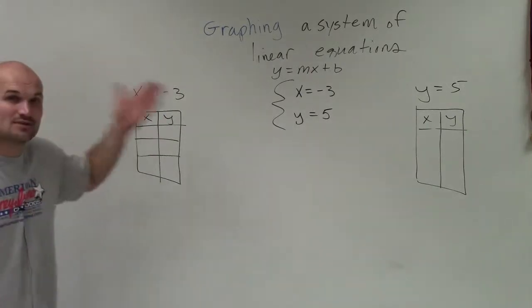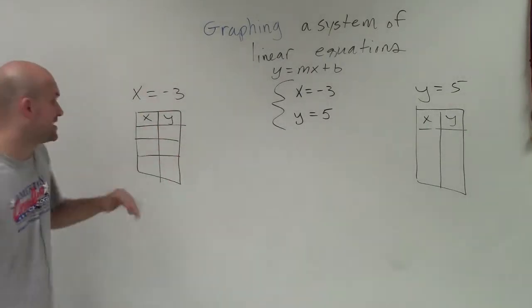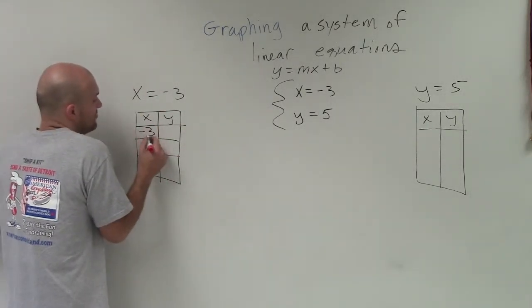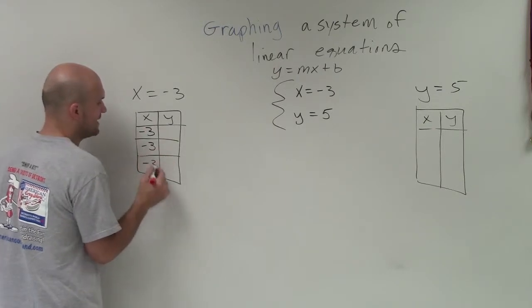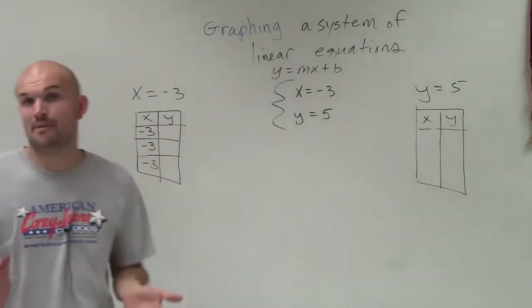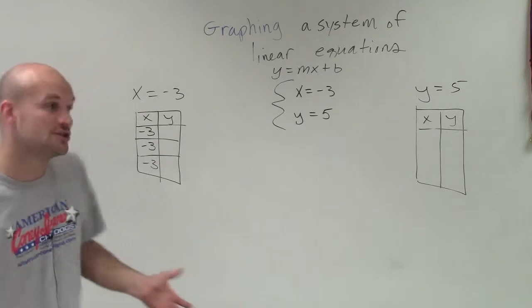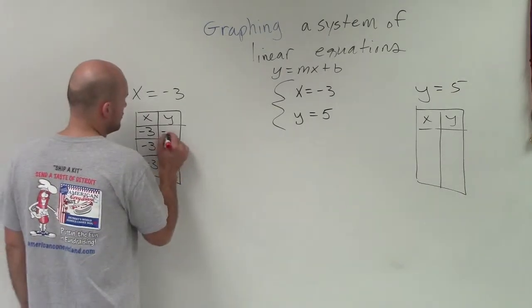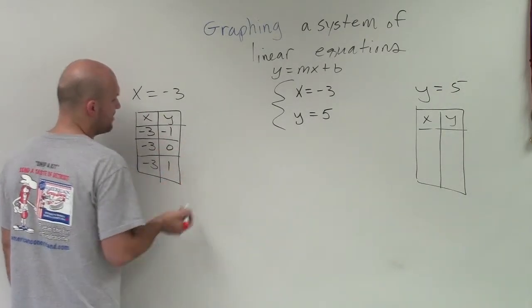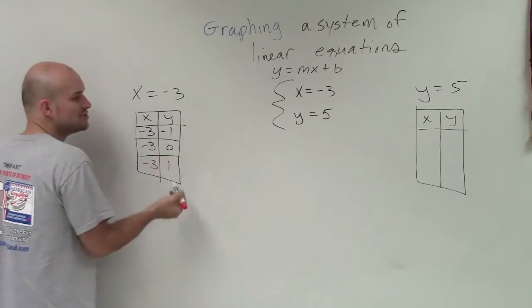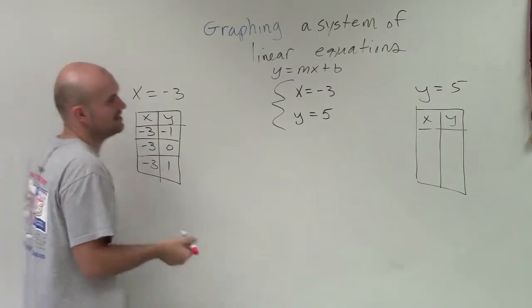This says x equals negative 3. x always equals negative 3, so there are no other values I can put in for x except negative 3. For y, remember, y is our arbitrary value. We can choose the values we want for y, which would be negative 1, 0, and positive 1. But it doesn't matter what values I choose for y, x is always going to be negative 3.